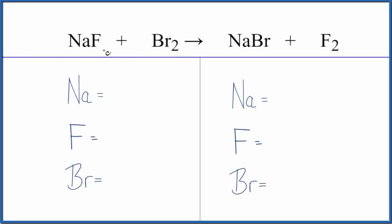In this video we'll write the balanced equation for NaF plus Br2, sodium fluoride plus bromine gas. So first thing we do, we count the atoms up on each side: one sodium, one fluorine, and then two bromine atoms on the reactant side. On the product side, one sodium, two fluorine atoms, and one bromine.